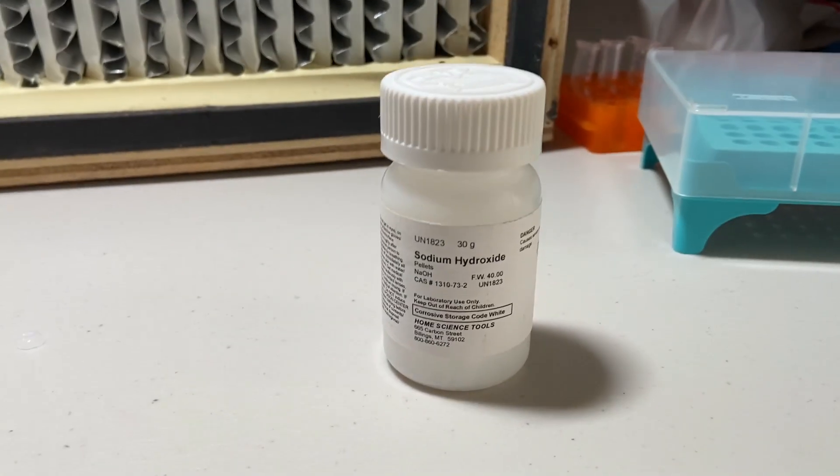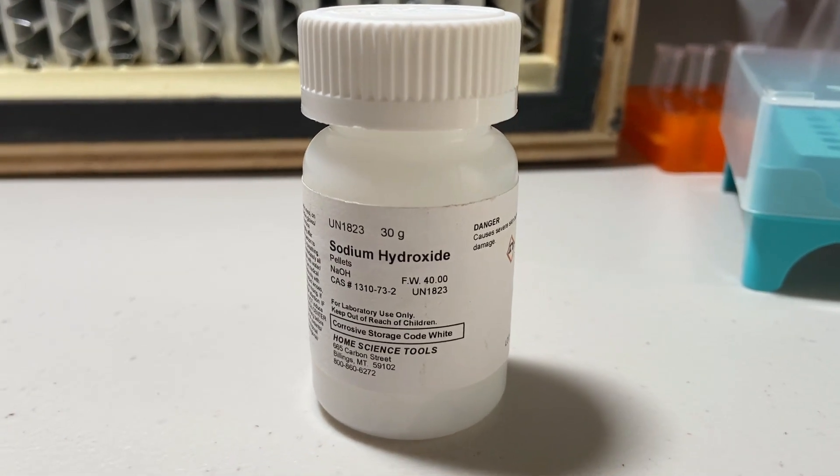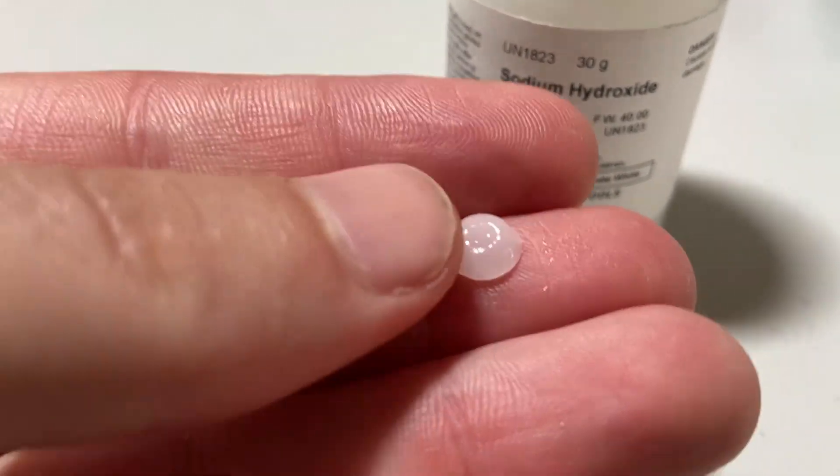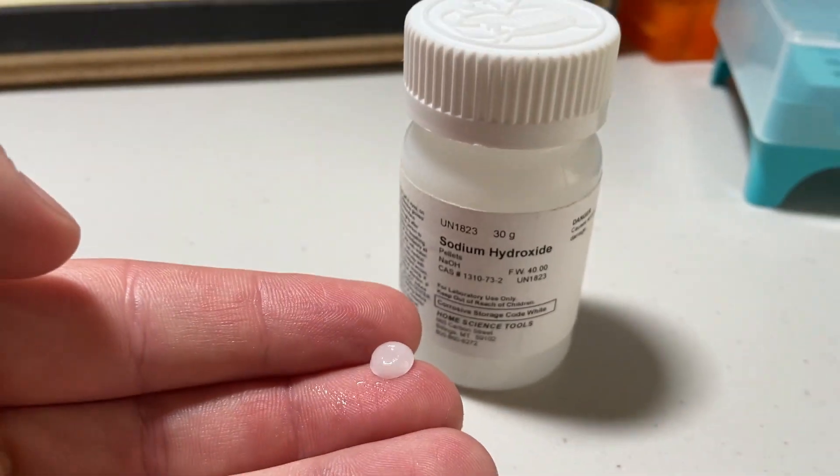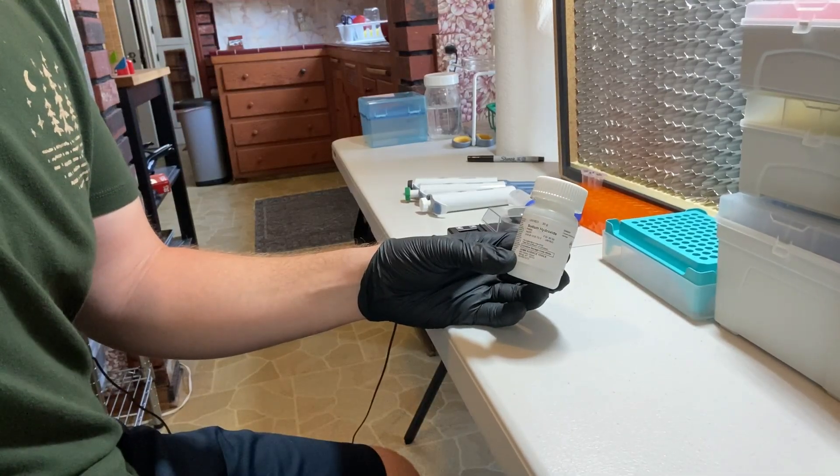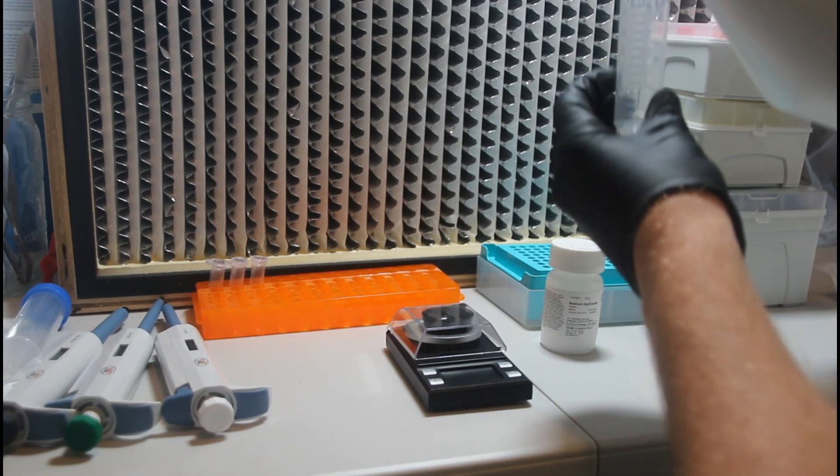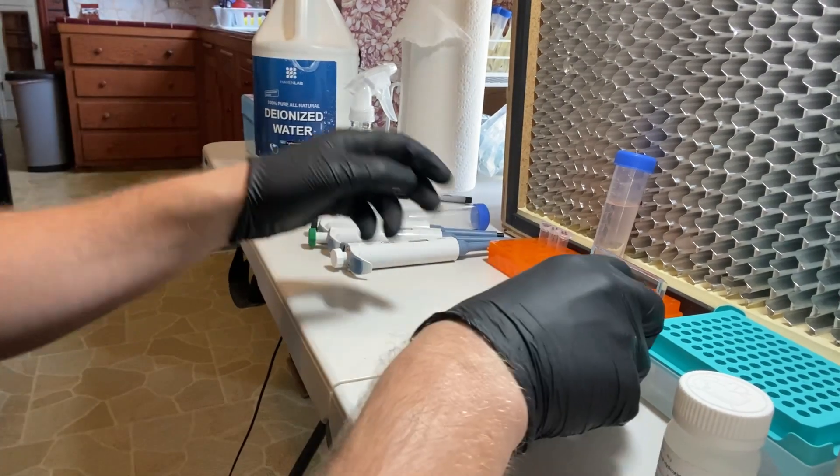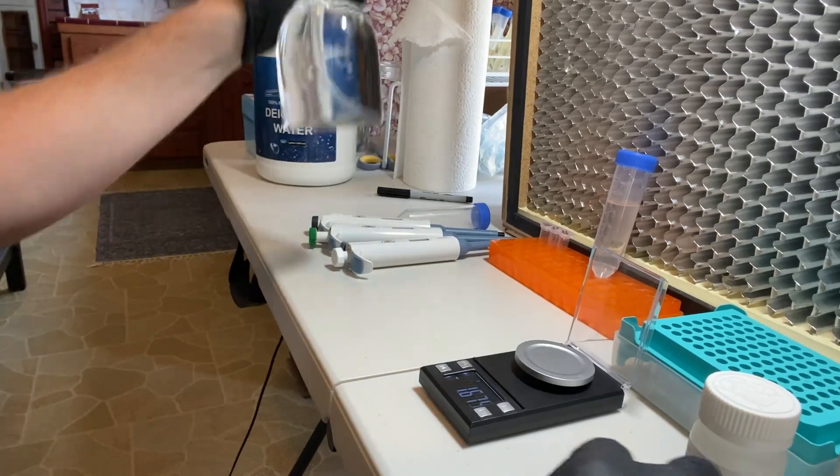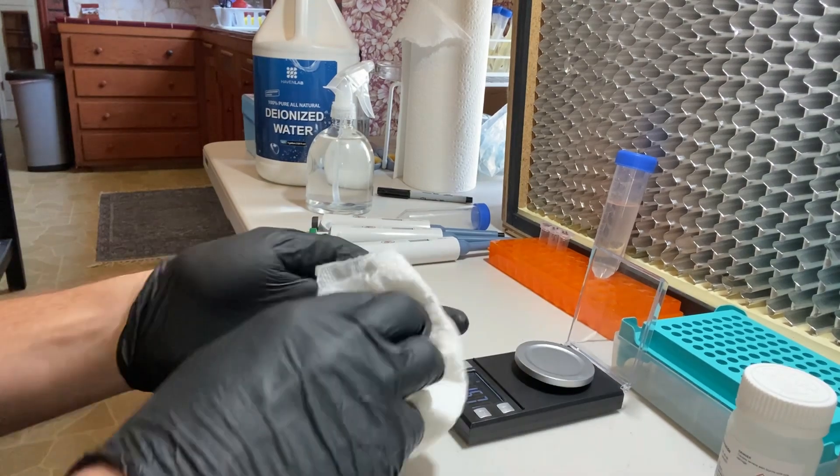The first step in the DNA extraction process is to prepare a working solution of sodium hydroxide. To prepare a working stock solution of 0.5 molar sodium hydroxide, we're going to take approximately 30 milliliters of distilled or deionized water, weigh out 0.6 grams of the sodium hydroxide, and mix it into the water.